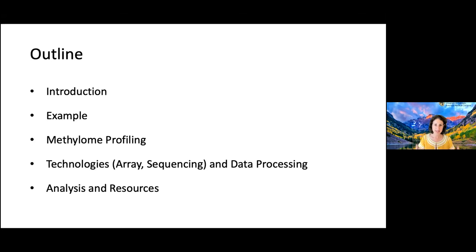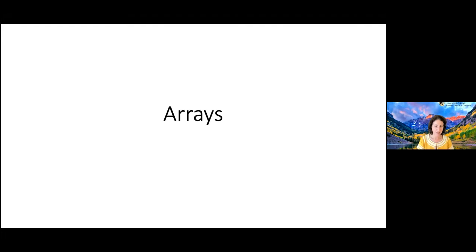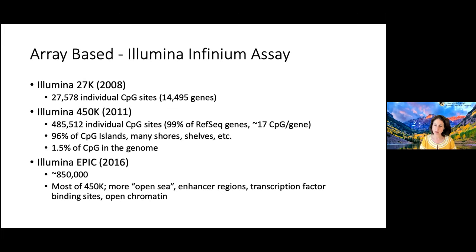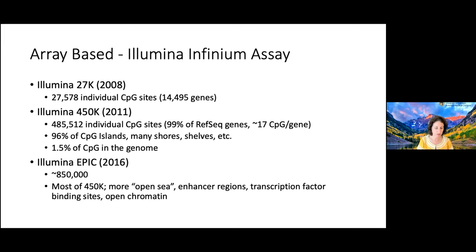Arrays are still the go-to for large human studies. The most widely used platform is the Illumina Infinium assay, which has evolved over time. It started with about 28,000 individual CpG sites covering around 50,000 genes — about one or two CpGs per gene. Then came the 450K platform with 485,000 sites, covering almost all genes with about 17 CpGs per gene, and covering most CpG islands and many shores — though still only about 1.5% of CpGs in the human genome. Then came the EPIC Array, almost twice as much coverage, focused not just on genes and CpG islands but also open-sea regions, enhancers, and open chromatin — less gene-centric.